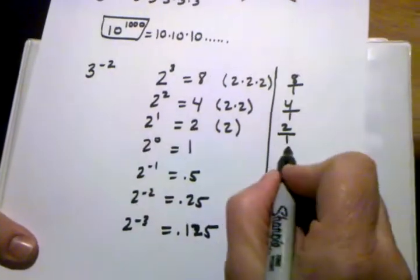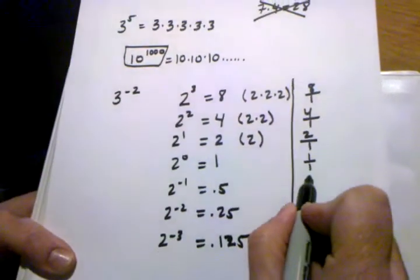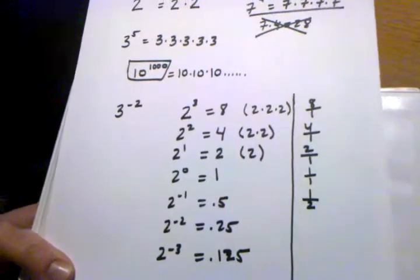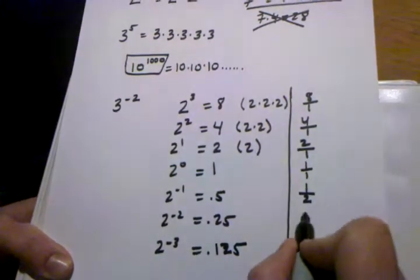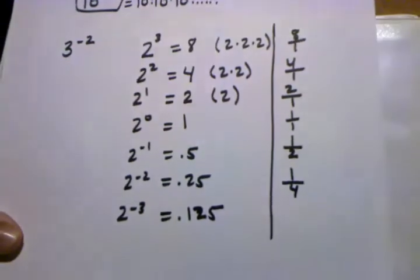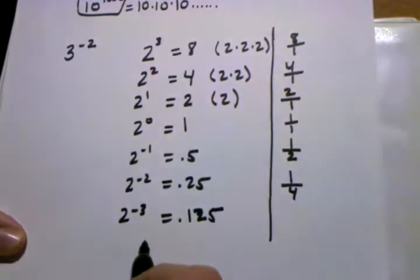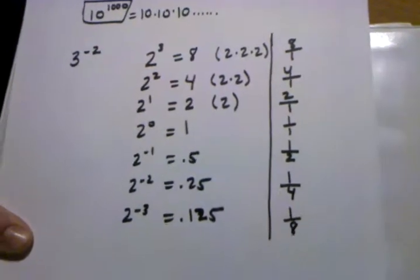1, we could say it's 1 over 1 if we want to. 0.5 is written as 1 over 2 when it's in fraction form. 0.25 is written as 1 over 4 or 1 fourth when it's written as a fraction form. And 0.125 is the same thing as 1 eighth in fraction form.